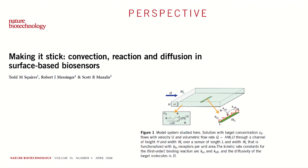They describe this system as fairly complex with lots of different effects at play. The target molecules diffuse randomly, they can be convected along with the flow, they can bind to the surface chemically, and they can also unbind and re-enter the solution. When you think about all these different effects, the paper says you have at least eight dimensional parameters required to describe this system, which is very complex mathematically — exact solutions aren't available unless you have very simplified systems.